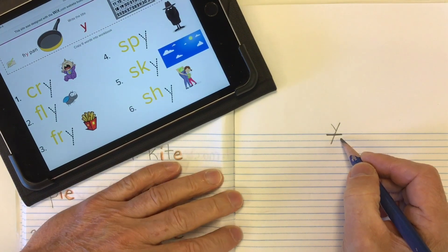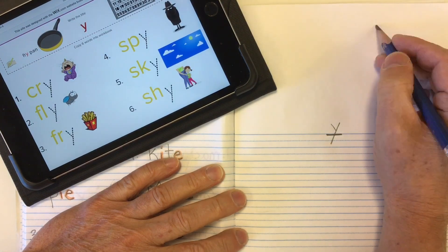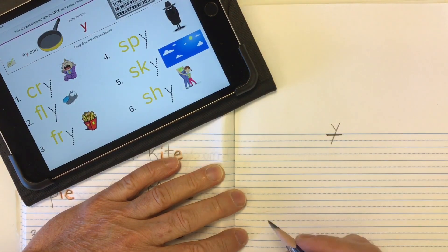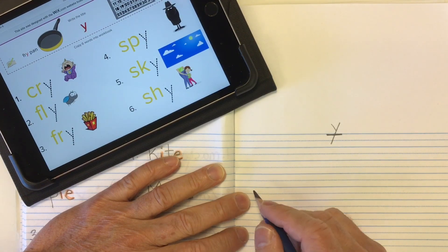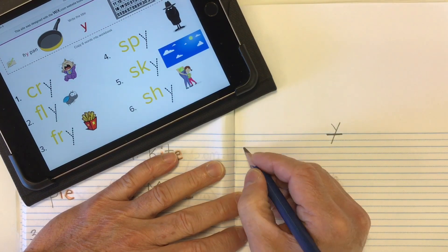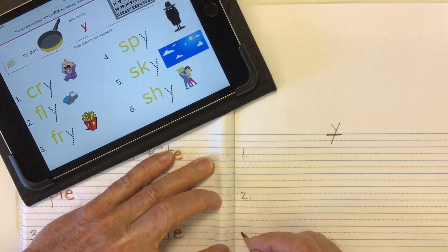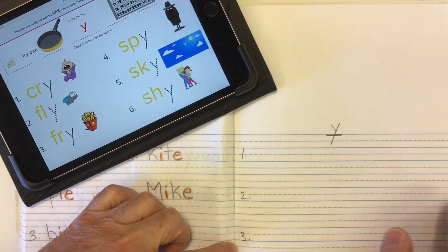We'll use that as our title, just the letter Y. We'll put the date up in the top corner for whatever date it is for you, and we're going to have six words that are going to end in the letter Y that make the sound I. So let's number one, two, and three down the side of my page. We'll skip a couple lines in between.